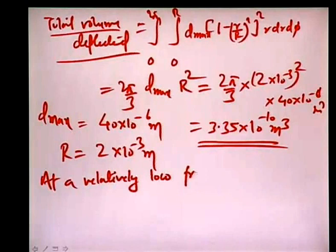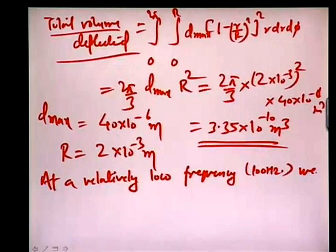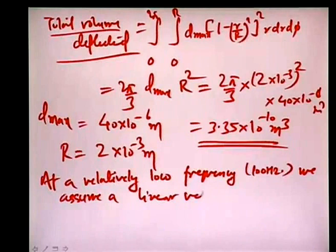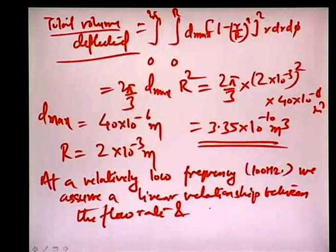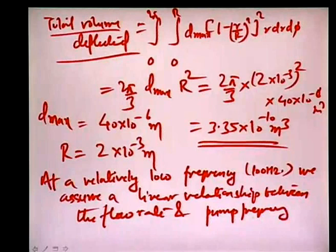At the relatively low frequency of 100 Hz, we assume a linear relationship between volume flow rate and pumping frequency. Therefore, the pumping rate Q = ΔV × f = 3.35×10⁻¹⁰ × 100 = 3.35×10⁻⁸ m³/s, which is about 2 ml per minute.